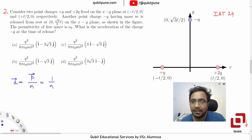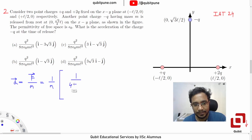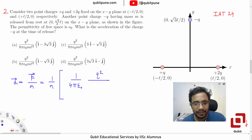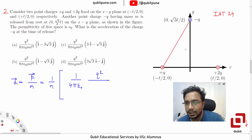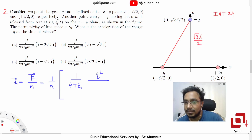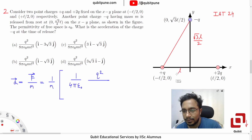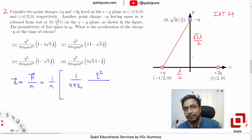Tell me what will be the force on -q due to +q in magnitude: it is (1/4πε₀) × q²/r². Can someone tell me the hypotenuse's length? The vertical side is √3·l/2, so its square is 3l²/4. The horizontal side is l/2, so its square is l²/4. Adding: 3l²/4 + l²/4 = 4l²/4, the 4s cancel and you get l². So the distance is l.